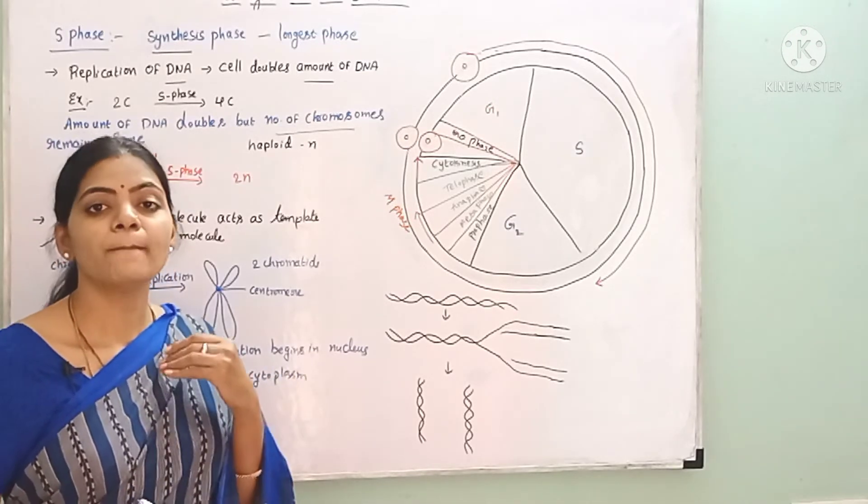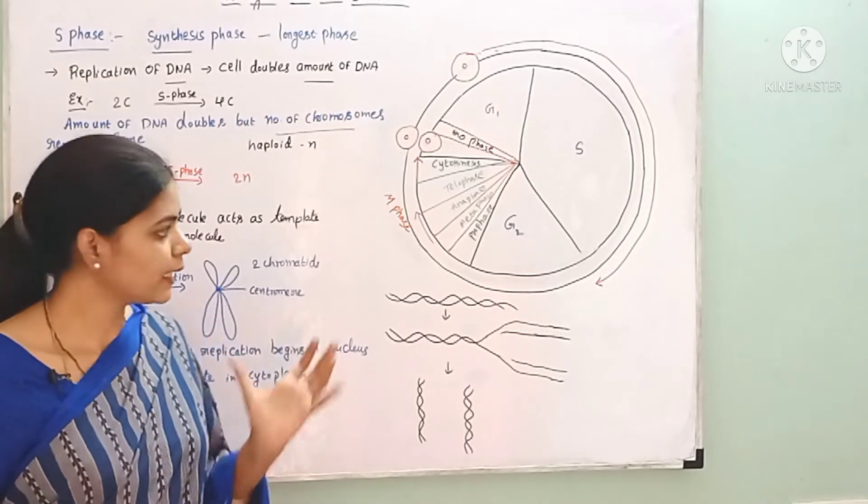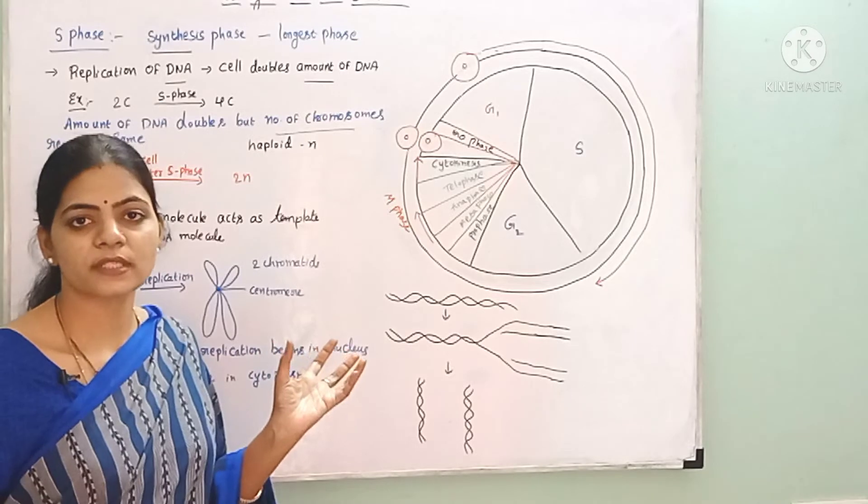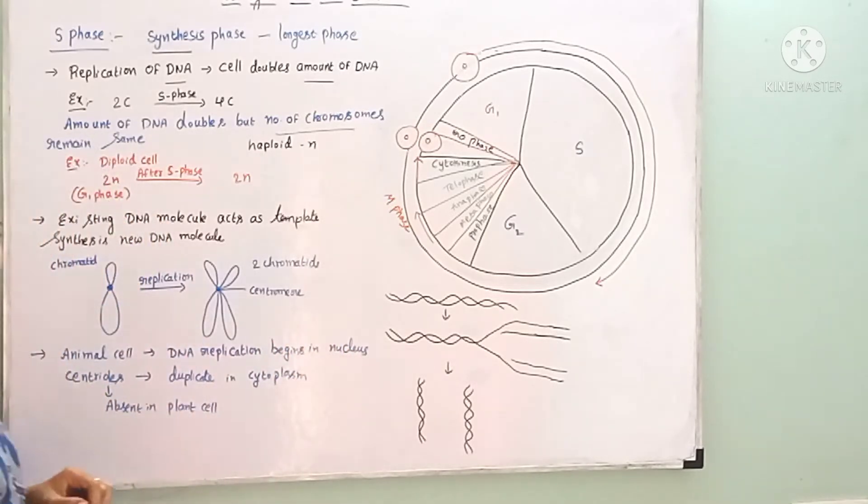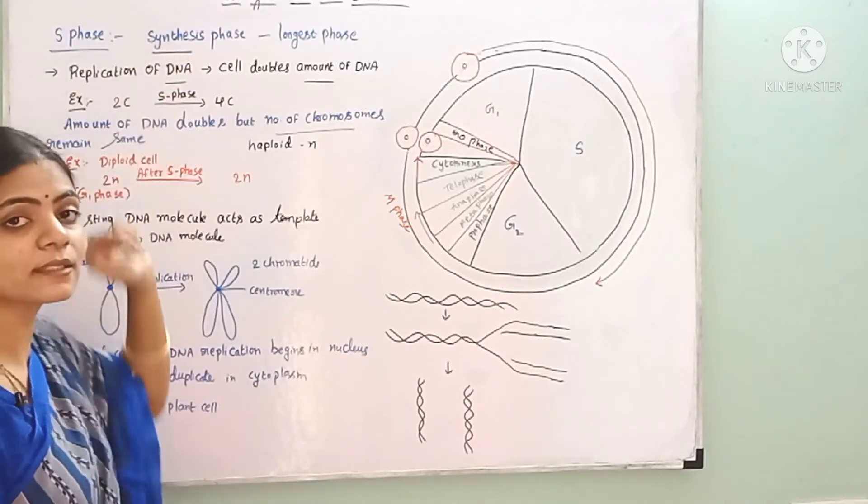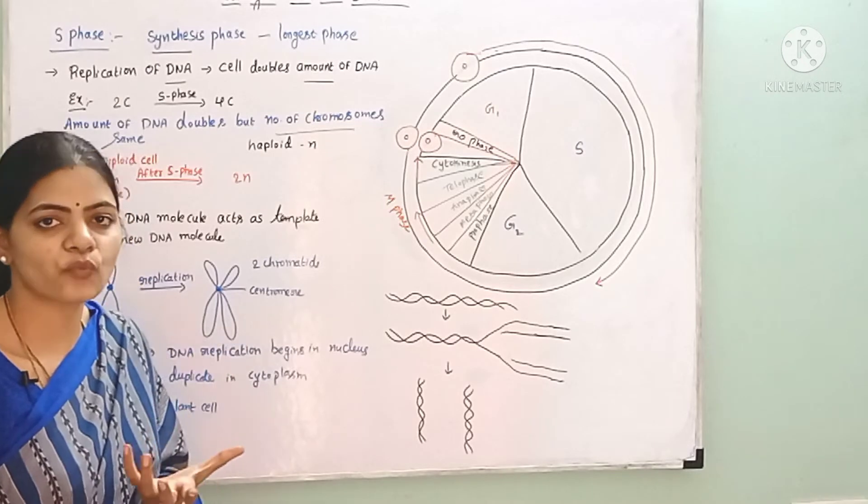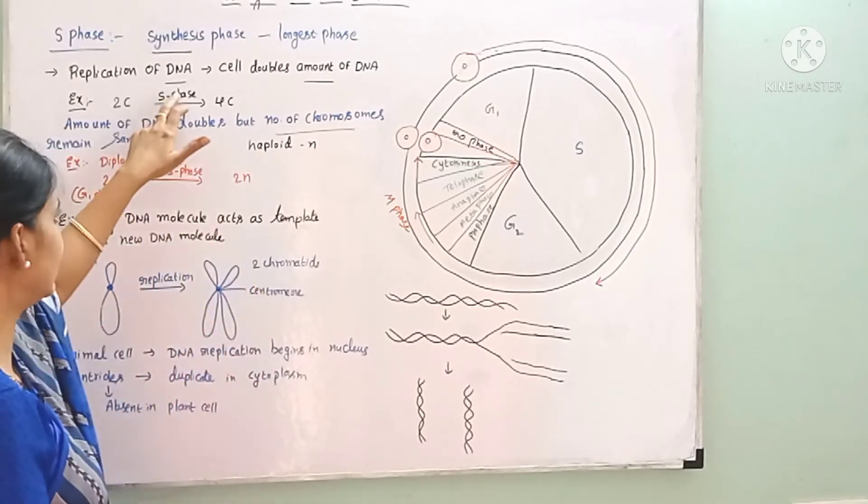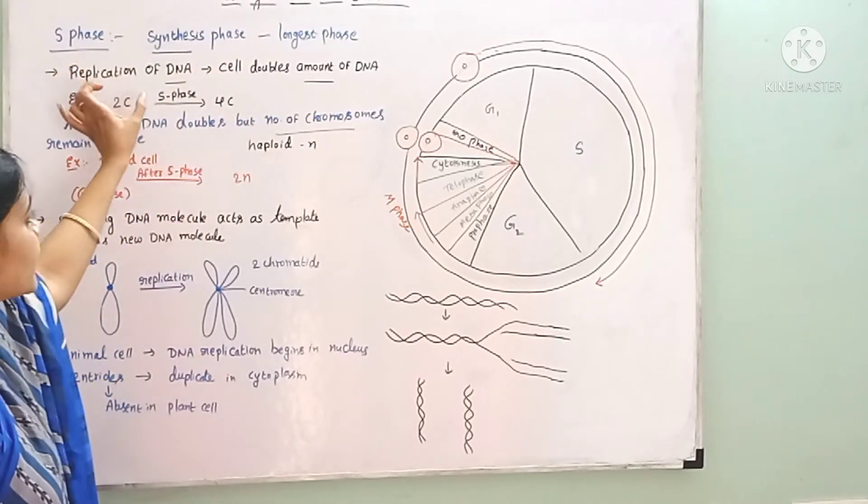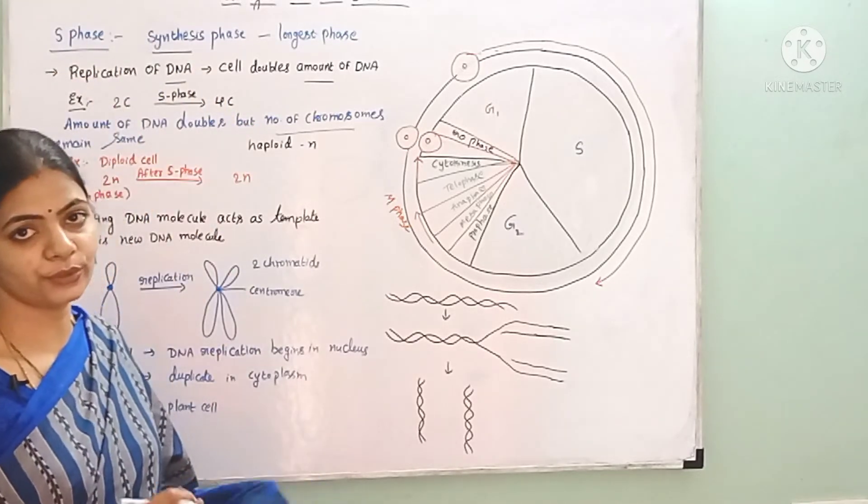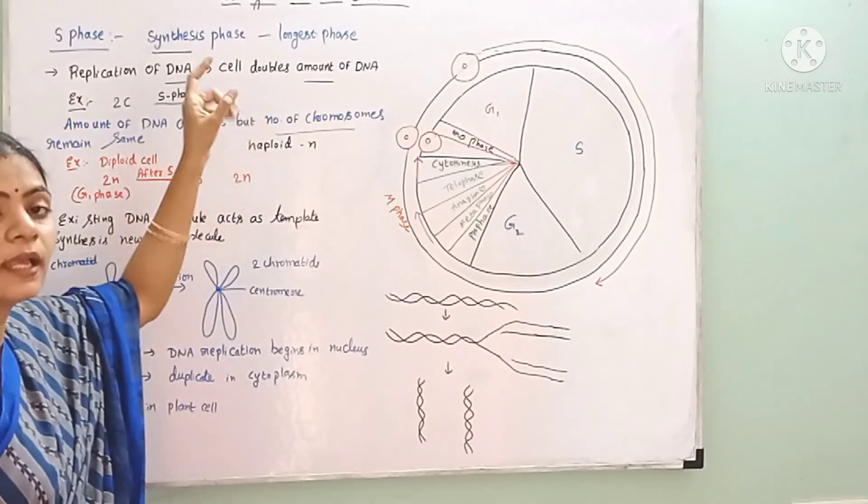After G1 phase comes S phase. S phase means synthesis phase. What is it synthesizing? DNA. So DNA replication occurs in S phase and the main function of S phase is replication of DNA.